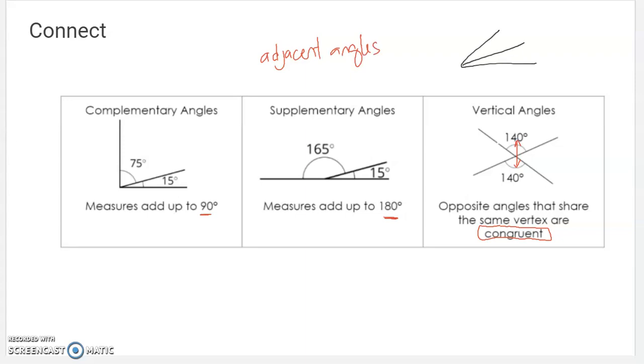Those are angles that share a same side. So this angle and this angle are adjacent angles because they share a vertex and a side. So the complementary angles are also adjacent. They're special adjacent angles. So are these. These are not. They're across an intersection from each other. So adjacent angles here would be like the 140 and the one next to it. Those would be adjacent because they share this side, but the vertical angles are not. So that's what we've talked about. Adjacent, complementary, supplementary, and vertical.